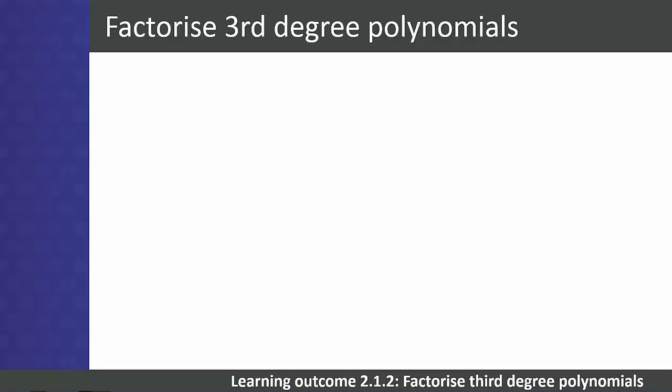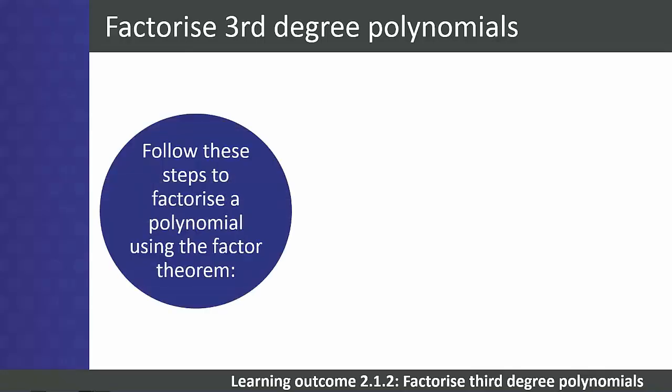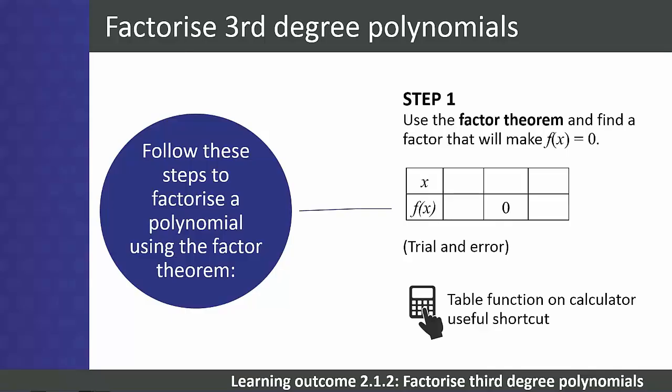Once students are familiar with either synthetic division or long division or both, we are ready to move on to the factorizing of third-degree polynomials. Students already know how to factorize quadratic and linear expressions from previous levels. Here are the steps you need to factorize a polynomial using the factor theorem. Step 1. For the first factor, use the factor theorem and find the factor that will make f(x) equal to 0. It can be useful to draw a table of selected x values and choose one where f(x) is equal to 0 as the first factor. The first step is a trial and error method. Most calculators have a table function that can make this step much quicker and easier for students.